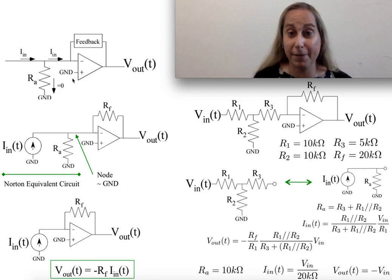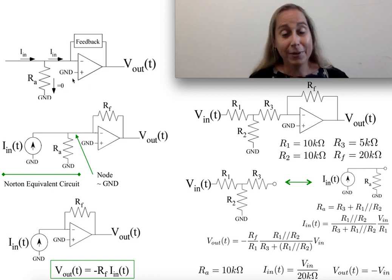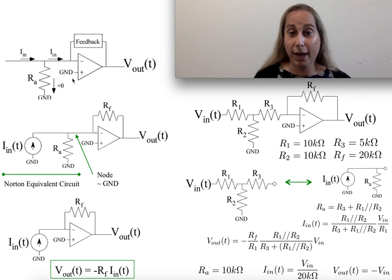Again, this assumes an ideal op-amp, so the gain is infinite, but if it's not infinite, I might have to think about how much this will affect me, but in general this is a fairly good approximation in many cases, such that basically it's as if that resistor doesn't exist.